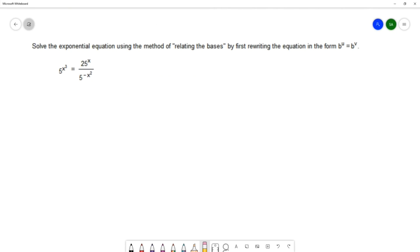The equation we're working with is 5 to the x cubed power equals 25 to the x over 5 to the negative x squared.